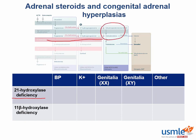Since the mineralocorticoid pathway is shut down, we'd expect to see the opposite of aldosterone's effects: decreased blood pressure and increased potassium. We'd expect the increased androgens to cause increased development of the male external organs, but what we actually see is more noticeable in females. The excess androgens give the developing lady parts mixed signals, causing a range of virilized phenotypes ranging from clitoromegaly to vaginal underdevelopment. You don't usually see sexual side effects in infant boys, though they often undergo precocious puberty.